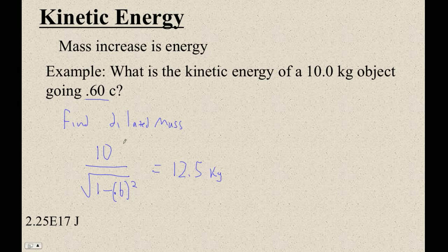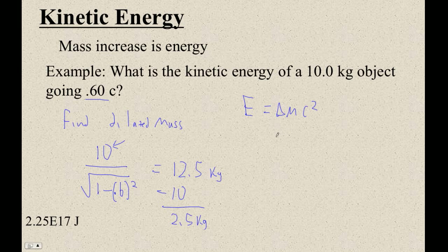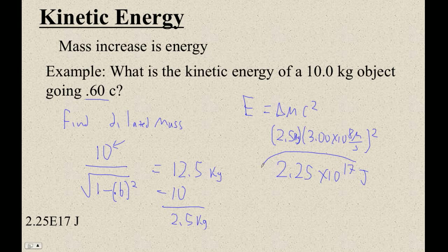Now the question is, what's the kinetic energy? This is the rest mass, this is the moving mass. How much mass of energy do we have? The answer is 2.5 kilograms of energy. So I'm going to say it's the change in mass times c squared. So it's 2.5 times 3.00 times 10 to the 8th meters per second, squared. A kilogram meter squared per second squared is a joule. So this is 2.5 times (3×10⁸)², and that's 2.25 times 10 to the 17th joules. Find the dilated mass, subtract the rest mass — that's how much your mass has changed — multiply by c squared. Simple as anything.